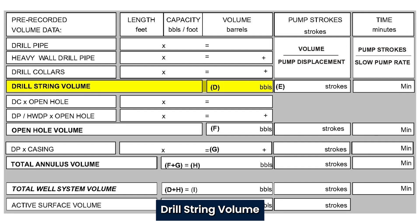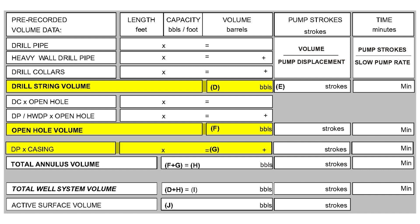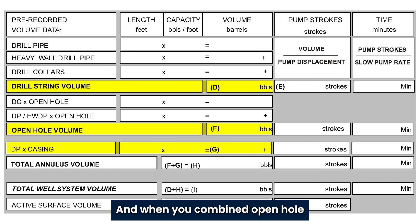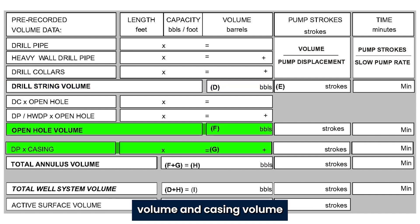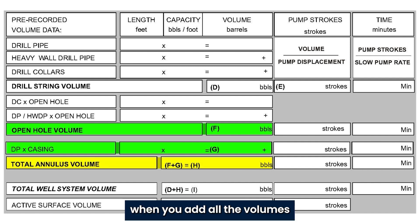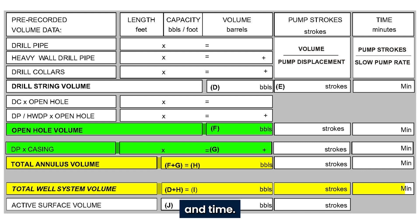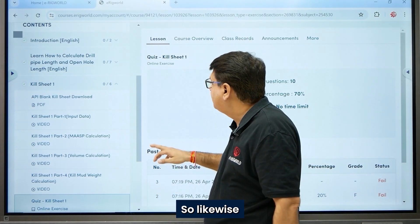The third video is a very important one because it teaches how to calculate different volumes: first the drill string volume, then open hole volume, then casing volume. Combining open hole volume and casing volume gives total annulus volume. Finally, adding all volumes gives well volume, and using that volume data you can calculate strokes and time.